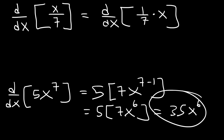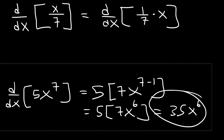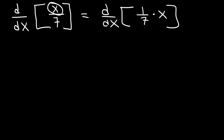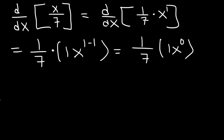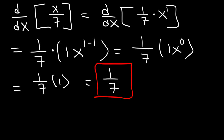Following the exact same process, the constant here is 1 over 7, and f(x) is x to the first power. Using the power rule, it's going to be 1x raised to the 1 minus 1. 1 minus 1 is 0, so we have x to the 0 power. Anything raised to the 0 power is 1. So 1 over 7 times 1 is simply 1 over 7. That is the derivative of x divided by 7.